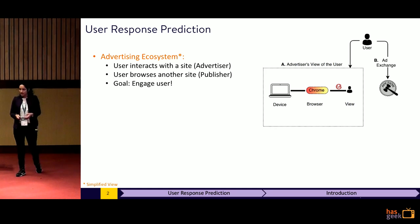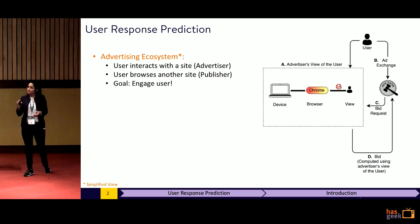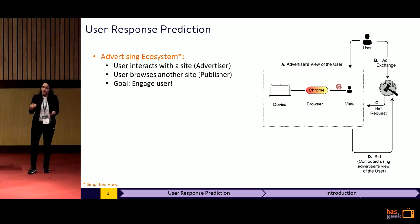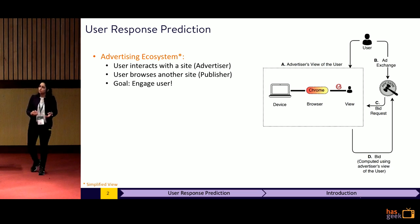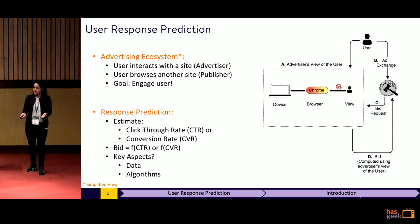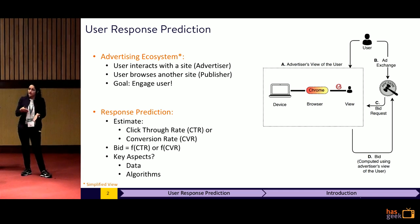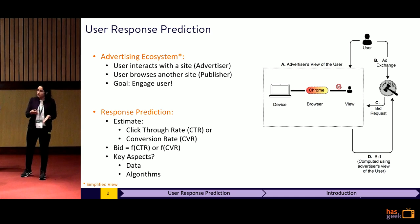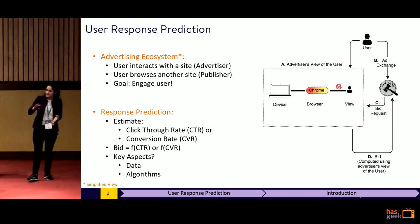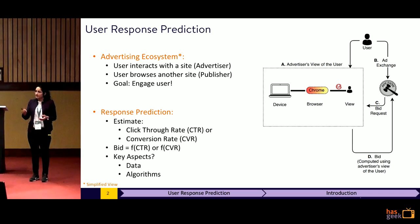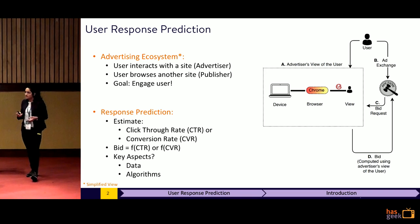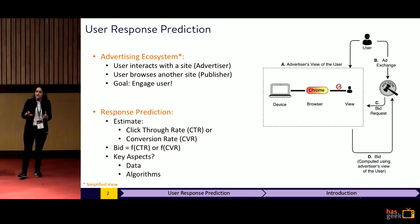So we take part in auctions and submit bids. These bids are computed at user level. We are trying to do user-level retargeting because as advertisers, we do not want to bombard users with ads. We only want to show relevant ads to users who are actually interested in our products. So this is where response prediction comes in. We want to predict if shown an impression, will a user actually end up clicking on our ad? Or if the user clicks on our ad, will they actually end up purchasing from our site? These are click-through rate and conversion rate respectively.